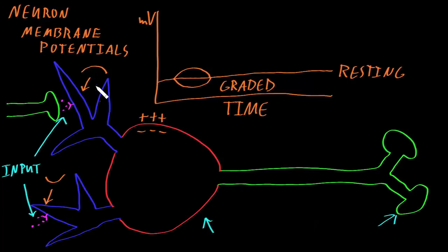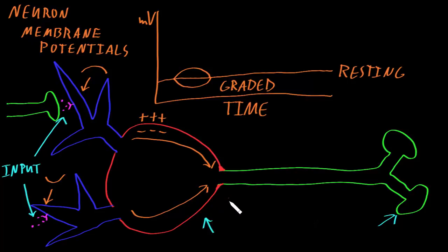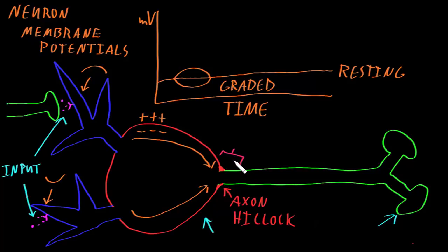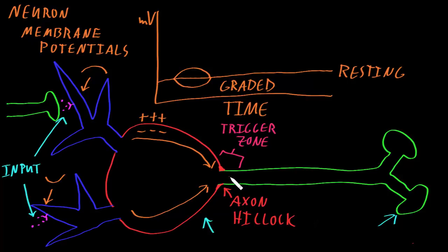Graded potentials can be happening in many different places in the dendrites and the soma, but that information will be transmitted to where the axon comes out of the soma. This structure where the axon is coming out of the soma is often rounded up like a little hill, so it's actually called the axon hillock. Either at the axon hillock or somewhere close to it, there is a functional area called the trigger zone. At the axon trigger zone, all that information from all the different graded potentials get combined together, and that process of combining all the graded potentials is called summation.